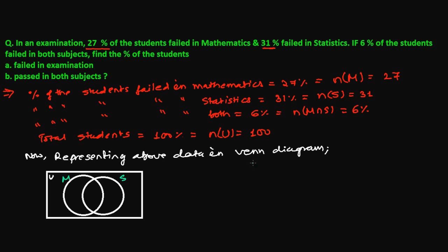Always start from the middle of the Venn diagram. Here is 6% — people who failed in mathematics as well as in statistics. Now total number of people who failed in mathematics is 27%. Out of 27, 6 I have already written here, so I am left with 21.